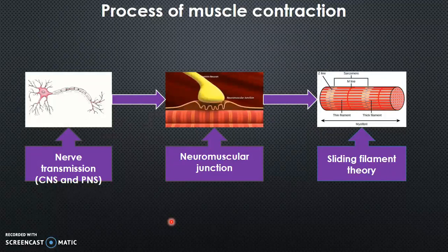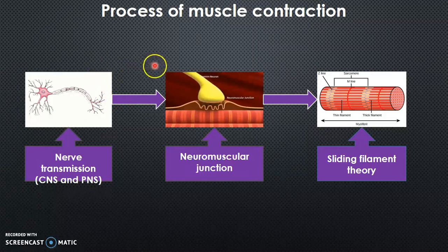To start off a muscle contraction there must be a nerve transmission. This could be in a sensory neuron where it sends a signal to the brain or the spinal cord, or it could be in a motor neuron. The impulse or action potential in a motor neuron travels along the axon by jumping over fatty sheaths called myelin. This process is called saltatory conduction. The action potential reaches the neuromuscular junction, where chemicals are released and this enables the sarcomeres to shorten. This process is called the sliding filament theory.